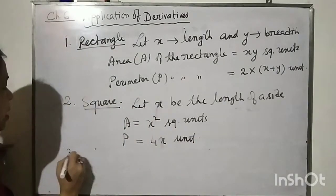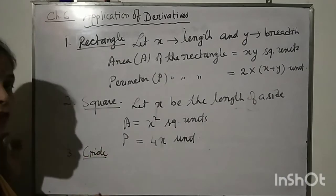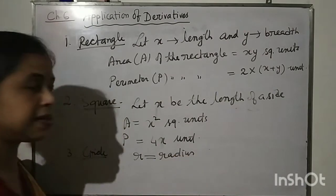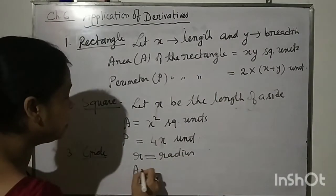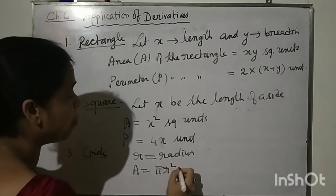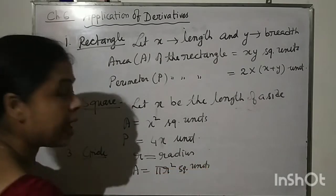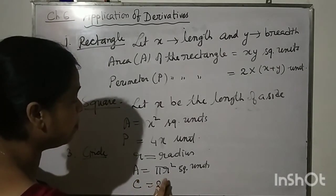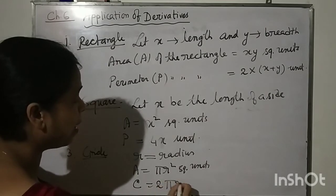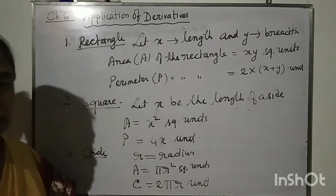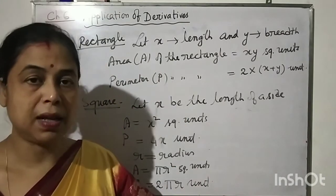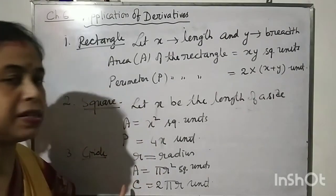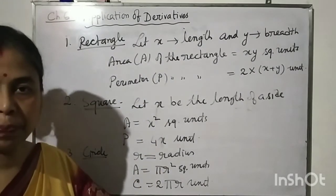For a circle, let R be the radius. The area is given by pi R squared, in square units. The circumference — which is the perimeter of the circle — is given by 2 pi R. That is the length of the boundary line of the circle.